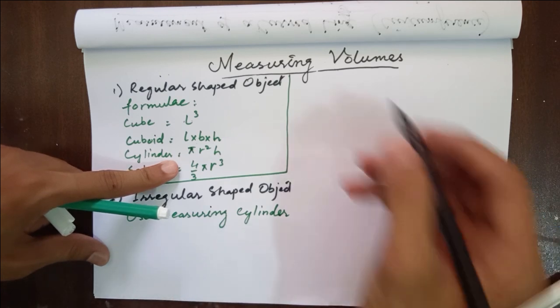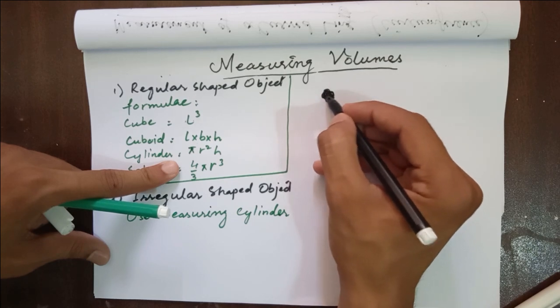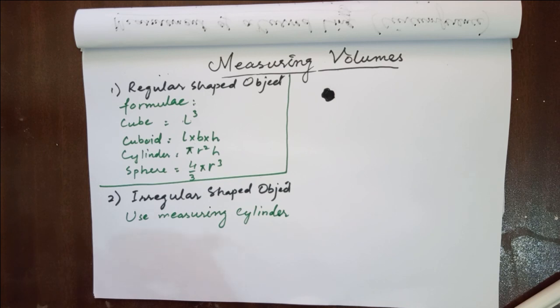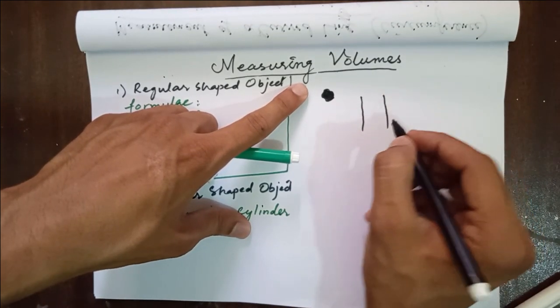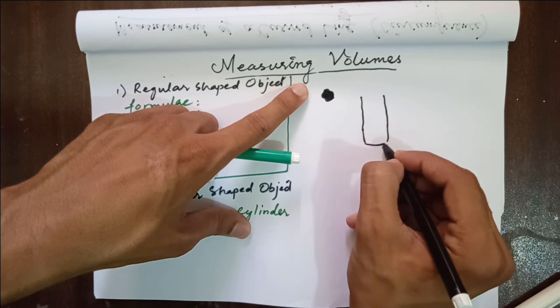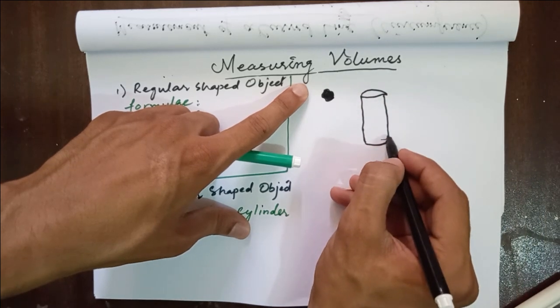Let's suppose the irregular shaped object is a stone of this shape. We cannot use any instrument like a rule or any other length measuring instrument to find out the volume of this irregular shaped stone. So, we will use a measuring cylinder. It's a cylindrical vessel that is used to measure the volume of liquids.